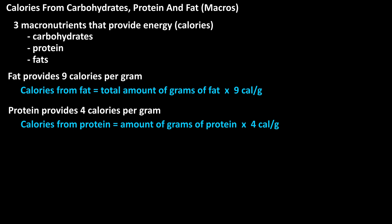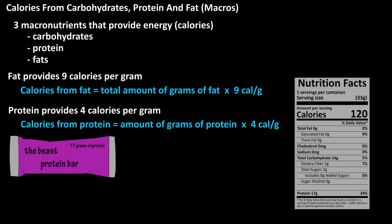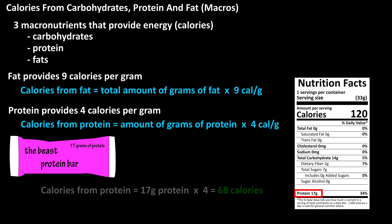For instance, if you eat a protein bar and on the nutrition label it lists protein at 17 grams, to calculate the number of calories from protein it would be 17 grams of protein times four, which equals 68 calories from protein.